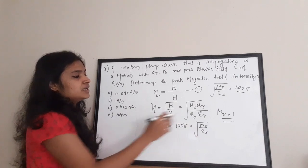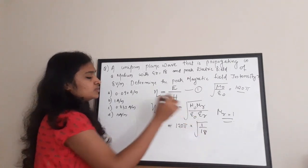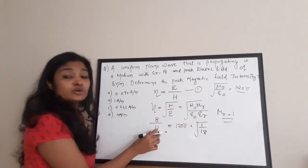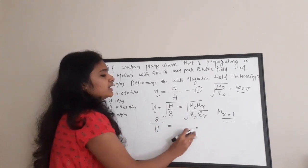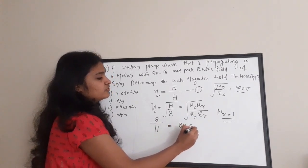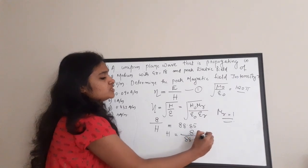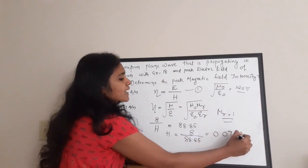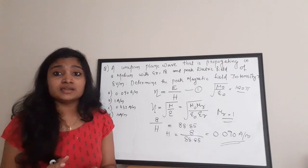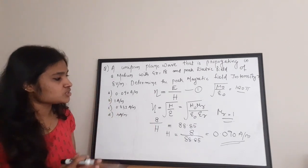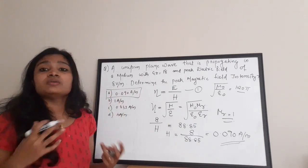With mu r equal to 1 and epsilon r equal to 18, we get eta equal to 120 pi into root of 1 by 18, which gives 88.85 ohms. Therefore H equals 8 divided by 88.85, which equals 0.090 ampere per meter. The magnetic field intensity is expressed in ampere per meter, and the correct answer is option A: 0.090 ampere per meter.